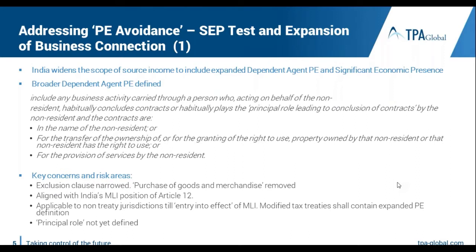Over the years, the business connection rule has been expanded to reinforce strict source-based rules. In 2012, when the government lost the Vodafone case regarding transfer of shares in an offshore company triggering transfer of interest in underlying Indian assets, they amended the business connection rule. Similarly, in the 2018 budget, they again amended it to expand the dependent agent PE definition and introduce some form of digital tax.